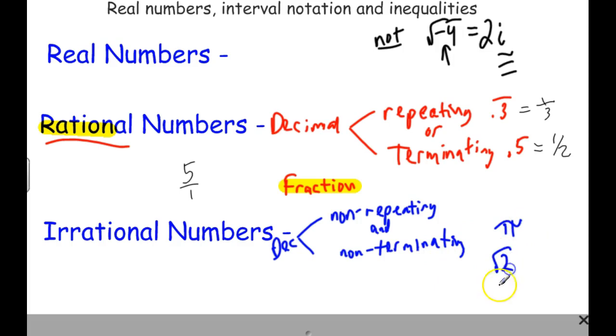But less famous, but still nice ones are square root of 3, square root of 2. Square root of 4 is actually not irrational because that's equal to 2. Or cube root of 5 would also be, anytime you have a square root of a non-perfect square, or cube root of a non-perfect cube, you would have an irrational number.